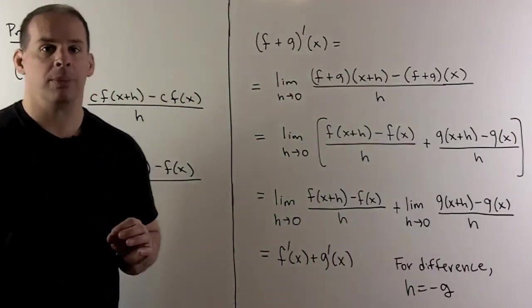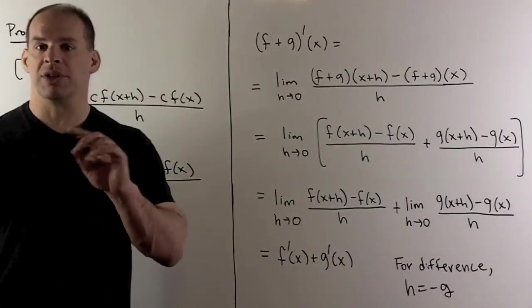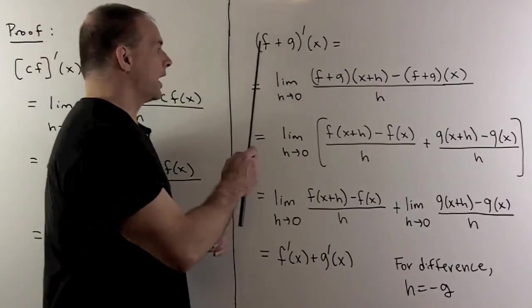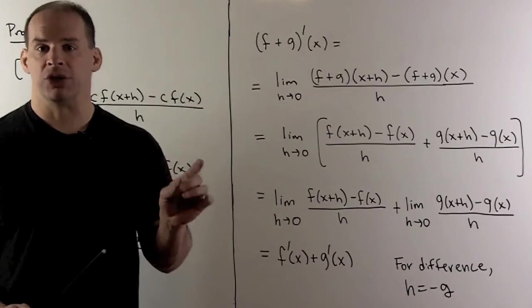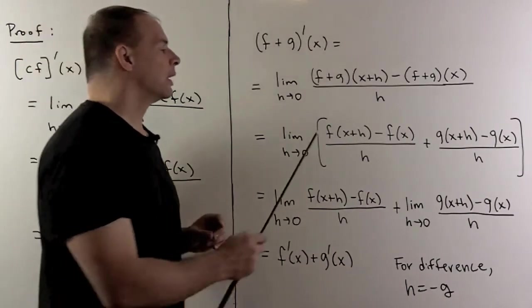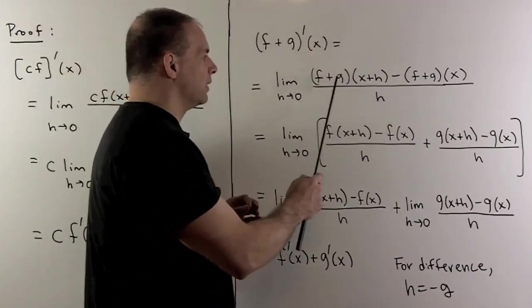For the second result, first let's just consider the sum. So we'll take f plus g, take the derivative, evaluate it at x. We write out the definition of derivative in this case. Then we're just going to split up the f and the g.